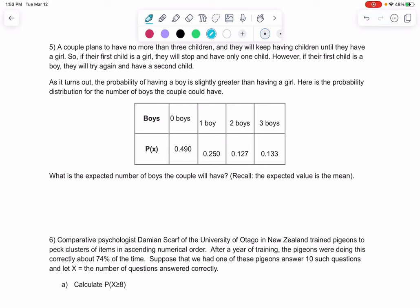So problem five, a couple plans to have no more than three children and they'll keep having children until they have a girl. So if their first child is a girl, they stop. There's a 49% chance that happens. Zero boys means their first child was a girl. However, if that first child is a boy, they're going to try again for a second child. So the probability of one boy means they have one boy and one girl, and that's a 25% chance. And then if they're both boys, they're going to keep trying until they have three boys, they're finally going to give up. So here's our probability distribution for them. So we want to find the expected number of boys this couple will have. This is like the long run average. I'm going to put the data or the variable into L1, the probability into L2, and we'll do one of our stats, L1 L2, to find the mean.